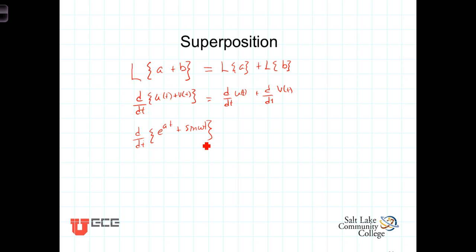Because the derivative is a linear operator, we know that that is simply equal to the derivative with respect to t of e to the at plus the derivative with respect to t of the sine of omega t, which is equal to a e to the at plus omega cosine of omega t.